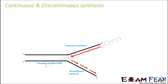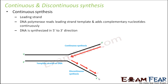Once the replication fork structure is formed, DNA polymerase can do its job — to create a copy of both separated strands. There are two types of synthesis: on one strand there is continuous synthesis, and on the other strand there is discontinuous synthesis. The strand where continuous synthesis takes place is known as the leading strand, and the strand where discontinuous synthesis takes place is known as the lagging strand.